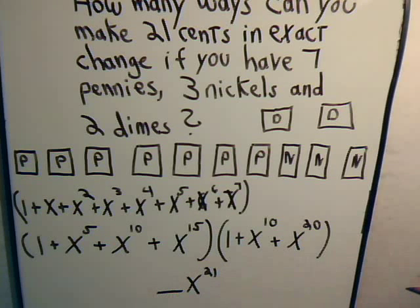And that coefficient will tell us the number of ways, then, that we can generate the equivalent of 21 pennies, or a total of 21 cents.